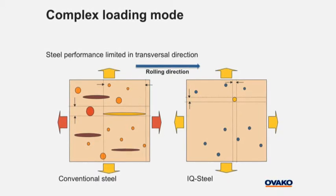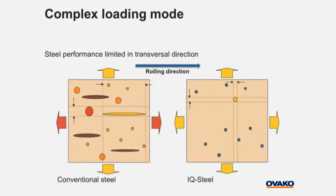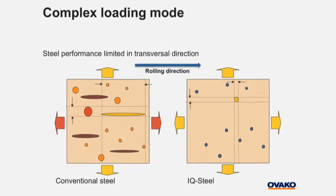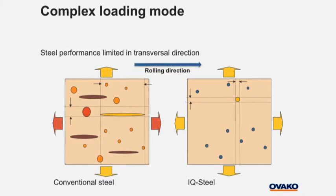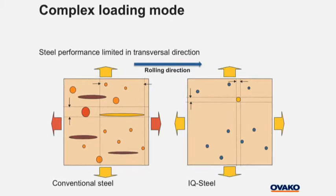If the steel is loaded parallel to the rolling direction — the red arrow in the left model — the fatigue strength will be higher compared to if it is loaded transverse to the rolling direction, shown by the yellow arrow in the same model. There are simply a higher number of large defects that can initiate a fatigue crack in this loading direction.